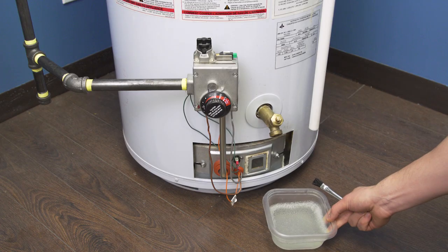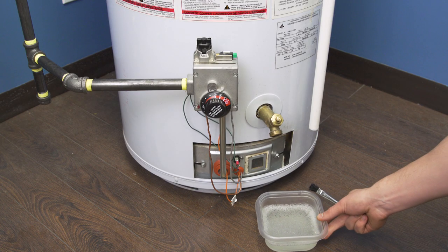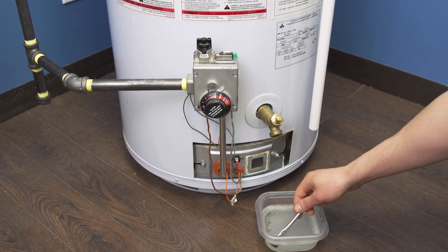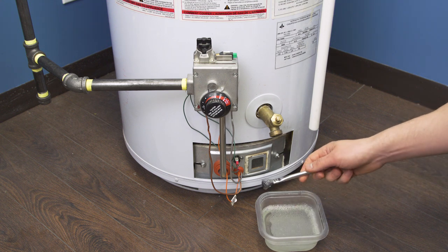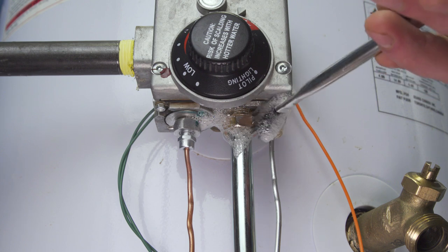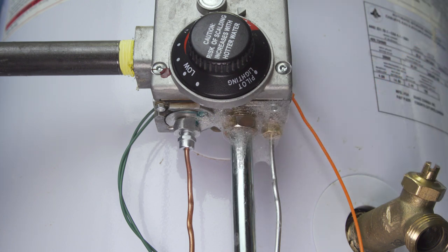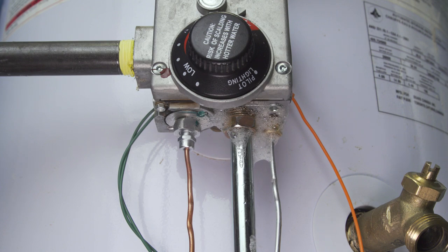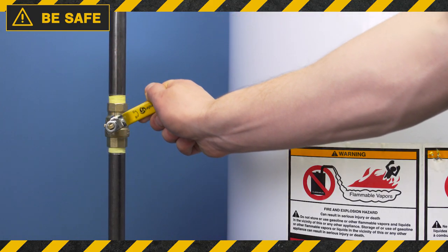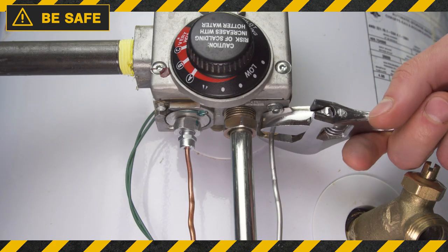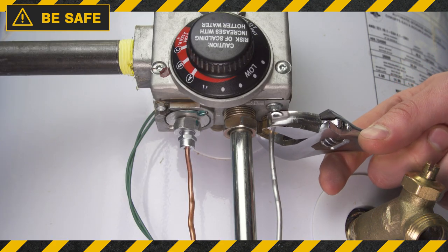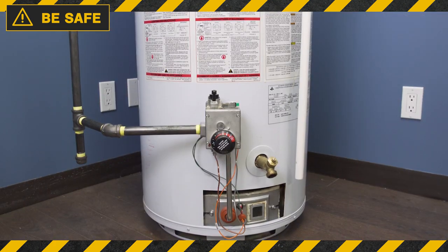While the burner is running it's best to do a final test to see if any gas is leaking. Apply a soap solution to the pilot and manifold tube connections. If you see any bubbles growing or if you smell a strong gas odor then turn off the gas and check your connections. If the problem persists then call a technician.